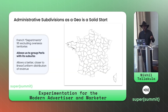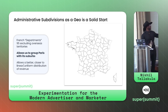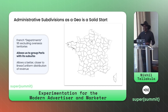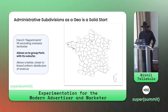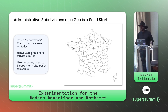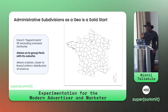Administrative subdivisions are a solid starting point. Using Google, Wikipedia, and other public resources, we determined that departments are the administrative subdivision to use in France. There are only 18 regions within France, but 95 departments, which allows for a more linear and uniform distribution of revenue. The region containing Paris would have far greater revenue due to population concentration, but breaking things down to departments makes the distribution more equal.